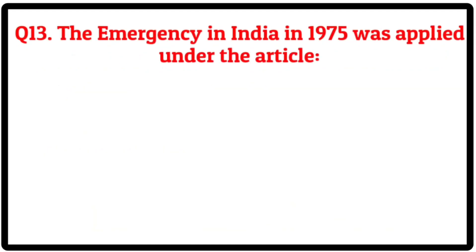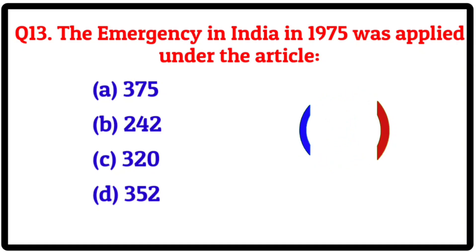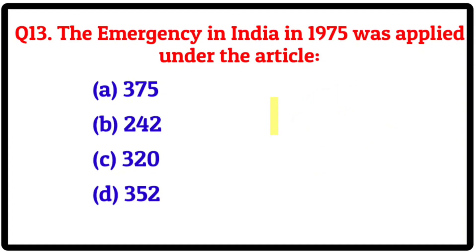Question 13. The emergency in India in 1975 was applied under which article? Option A: 375. B: 242. C: 320. D: 352. Correct answer is D: Article 352.